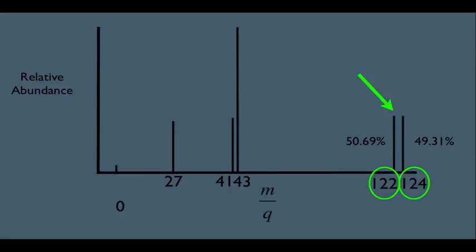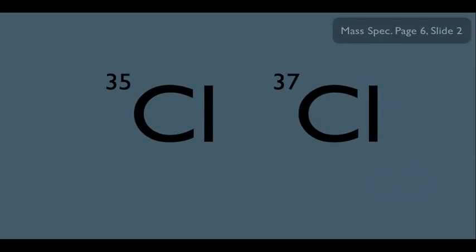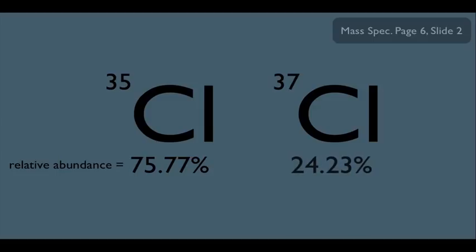To reinforce this concept, let's do the same analysis with the halogen chlorine. Cl also comes in two isotopic forms: Cl-35 and Cl-37, with relative abundances of 75.77% for Cl-35 and 24.23% for Cl-37.